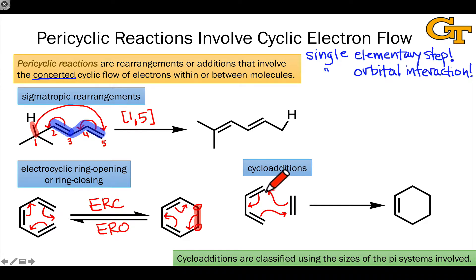For example here, we see that a butadiene containing a four atom pi system, four carbons there, combines with an ethylene or an ethene containing two carbons. And so we refer to this as a 4+2 cycloaddition based on the size of these pi systems.